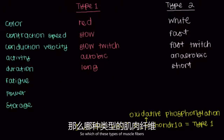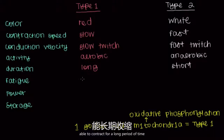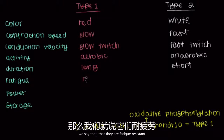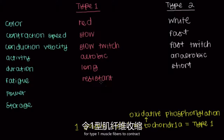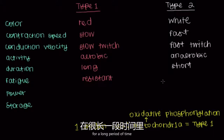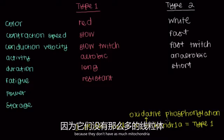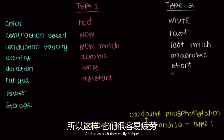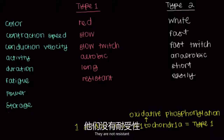Which of these muscle fiber types is most likely to fatigue? If type 1 muscle fibers are able to contract for a long period of time, they are fatigue resistant — they have enough energy to contract for a long time. But type 2 muscle fibers don't have as much energy because they don't have as much mitochondria, so they easily fatigue. They are not resistant.